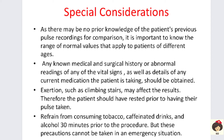Regarding special considerations and precautions: the nurse must have prior knowledge of the patient's previous pulse recordings for comparison, knowing the pulse from admission onwards. The nurse must also know the normal pulse value ranges for patients at different ages, since normal ranges vary in infants and children. Knowledge of any medical or surgical history, abnormal vital sign findings, and current medications the patient is taking is also essential, as these can all affect the pulse.